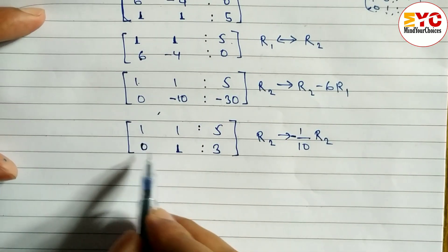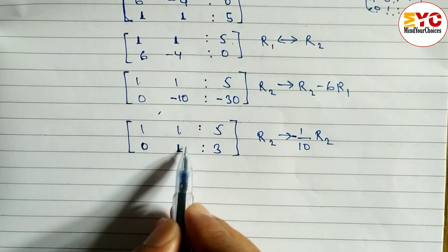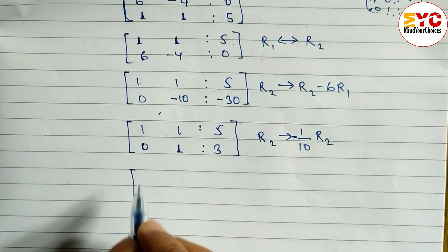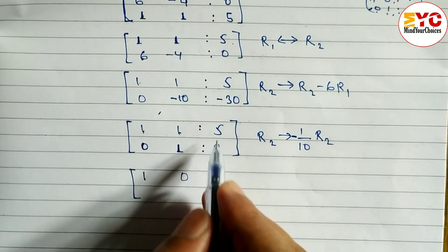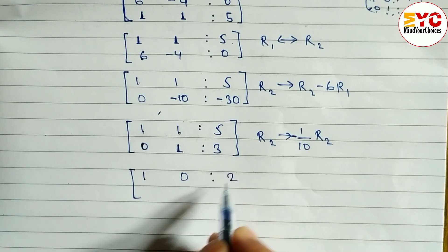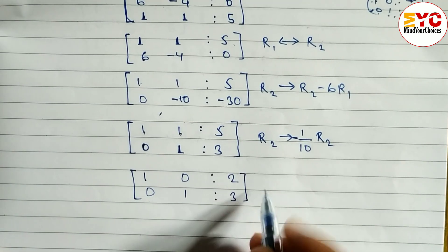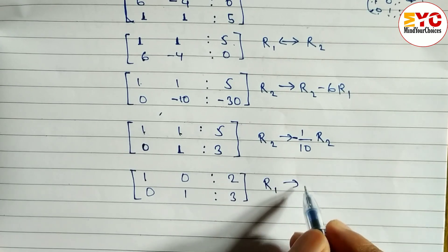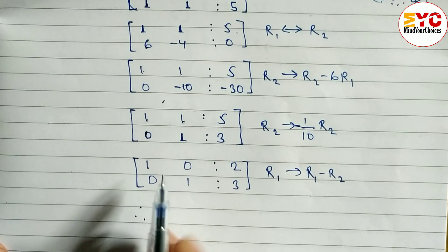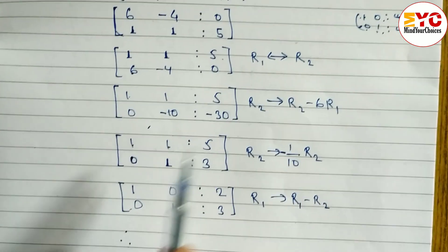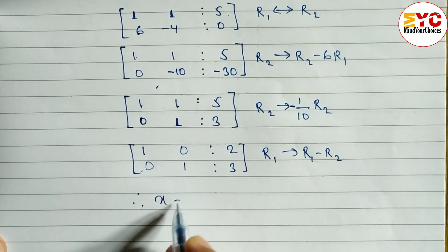Now we need zero in position row one, column two. We apply R1 = R1 minus R2: 1 minus 0 = 1, 1 minus 1 = 0, 5 minus 3 = 2. This gives us the identity matrix form [1, 0; 0, 1] with constants [2, 3].